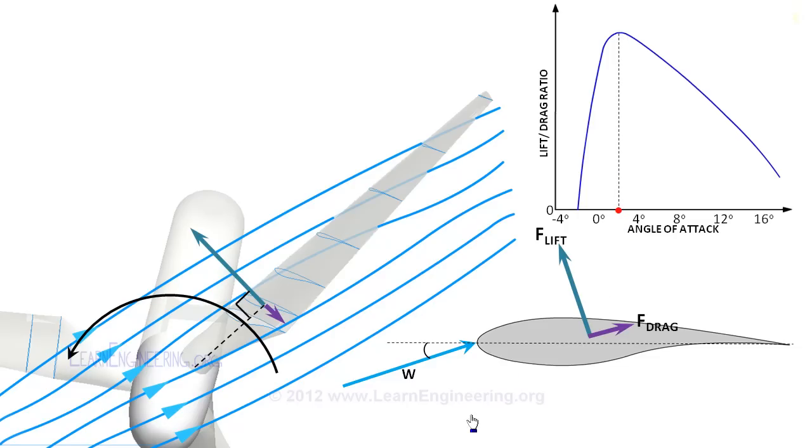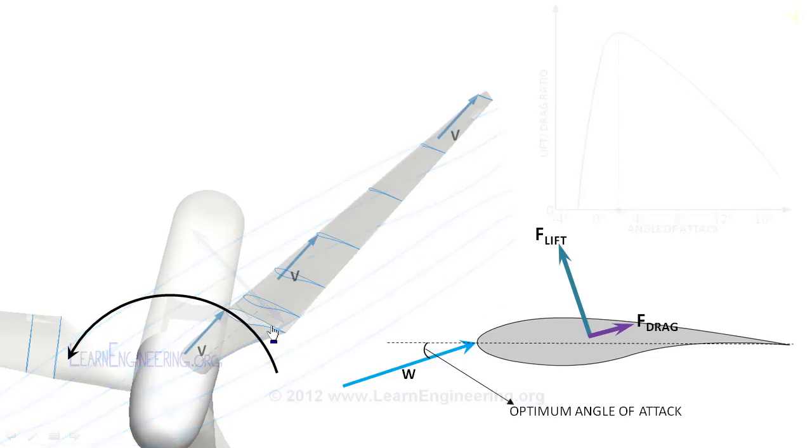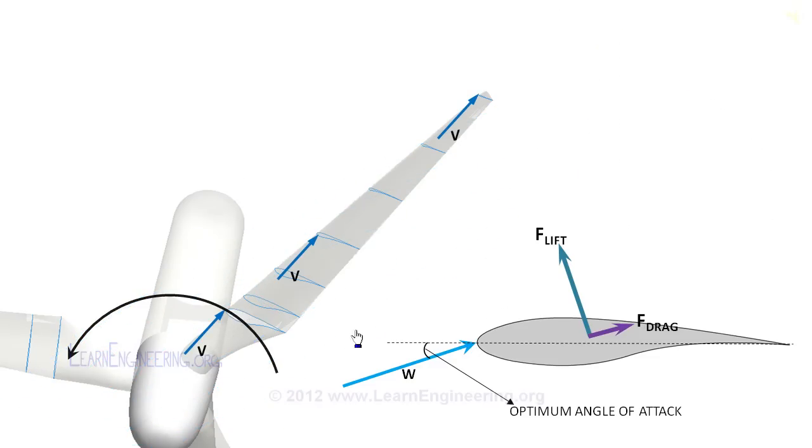Airfoil cross sections are aligned in a way to operate at this optimum angle of attack. Even though flow velocity is uniform along length of the blade, blade velocity increases linearly as we move to tip. So angle and magnitude of relative velocity of wind varies along length of the blade.